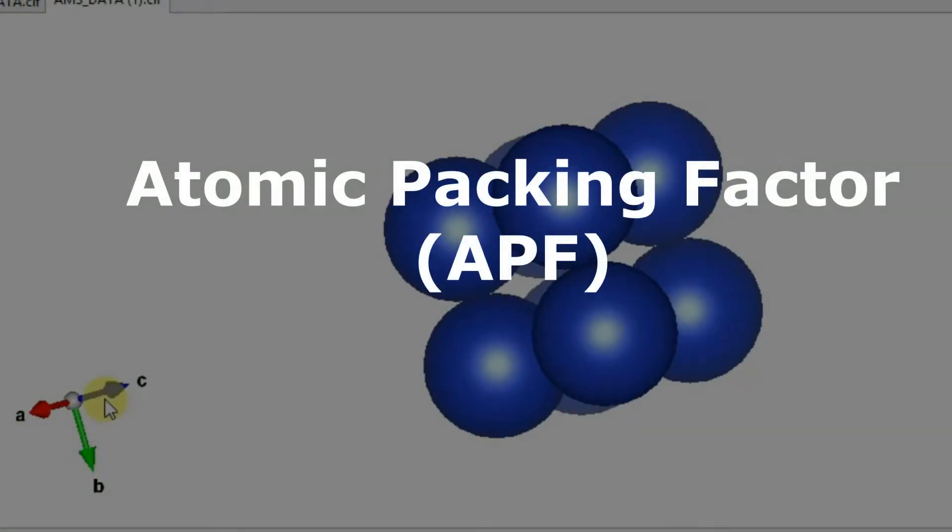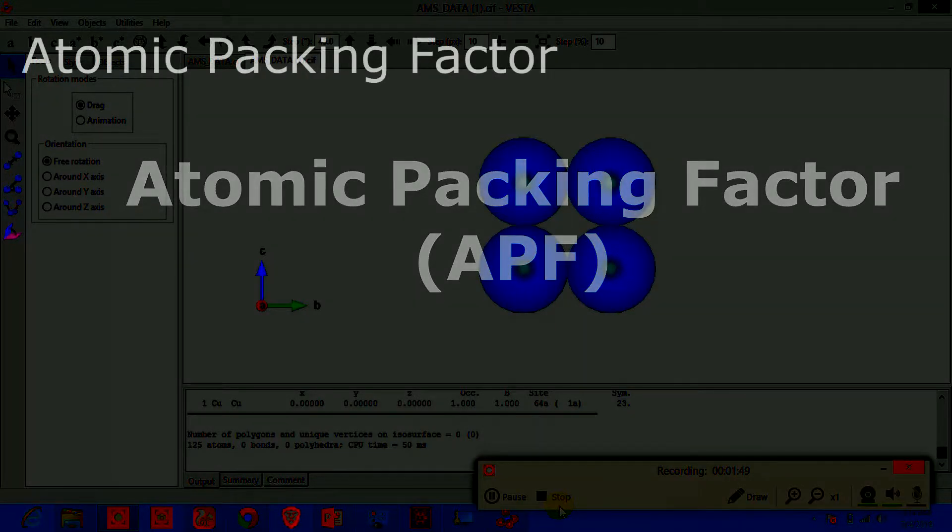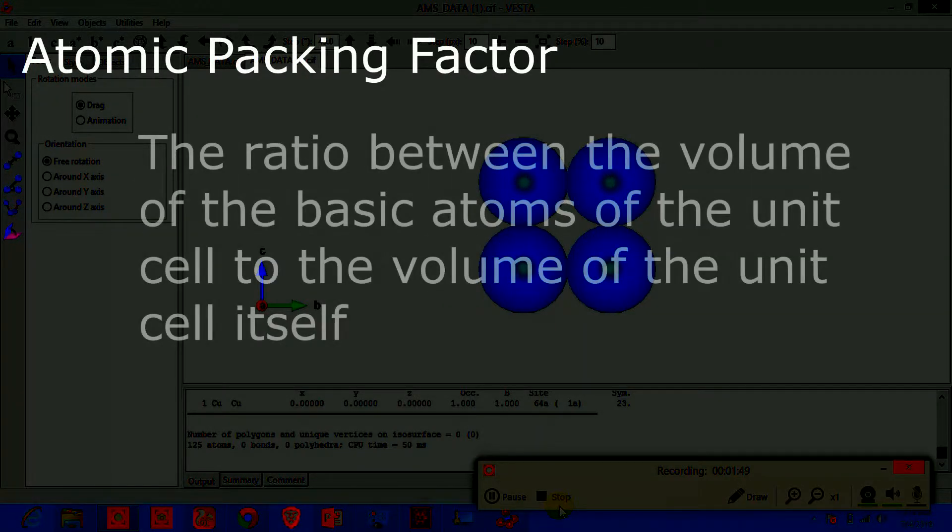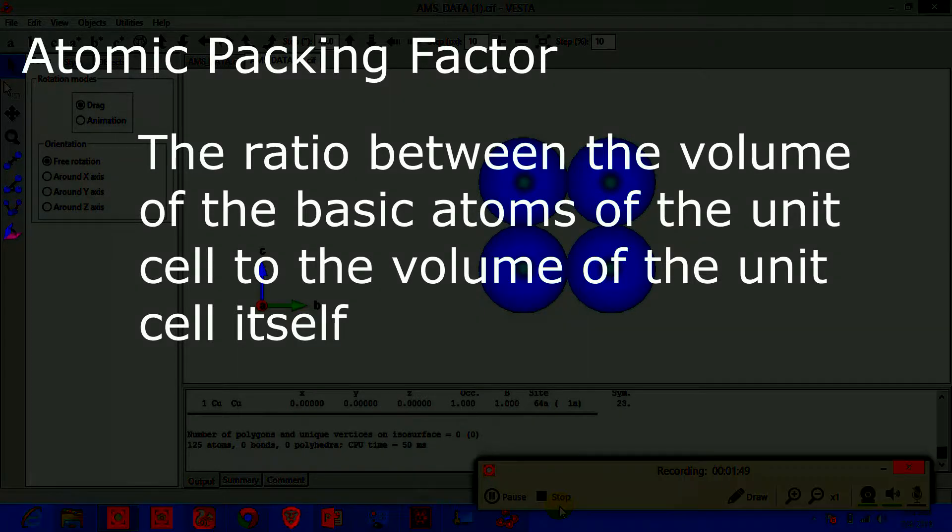Atomic Packing Factor shows us how closely the atoms are packed together in a unit cell. It can be defined as the ratio between the volume of the basic atoms of the unit cell to the volume of the unit cell itself.